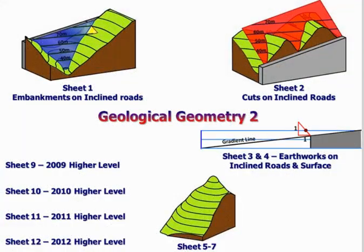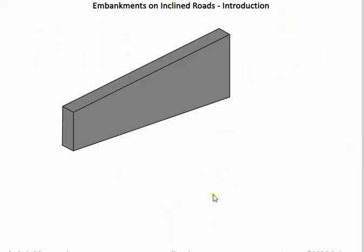In this lesson we're going to look at the higher level aspects of geological geometry, dealing with roads that are sloping — either rising or falling. These are referred to as inclined roads. The difficulty is that the height lines are not parallel to the road in either case, so we need to discover how we create these lines when they're not parallel to the side of the road.